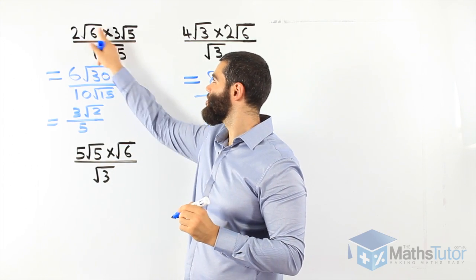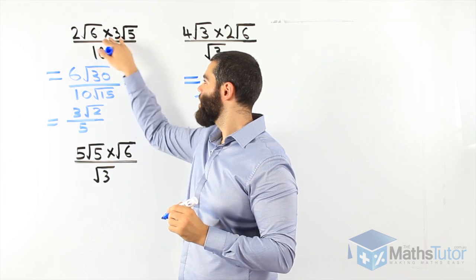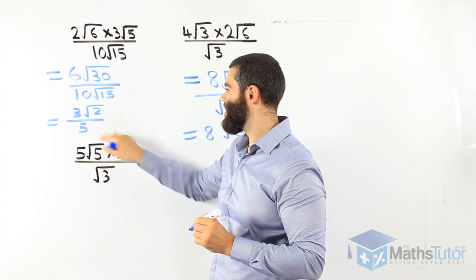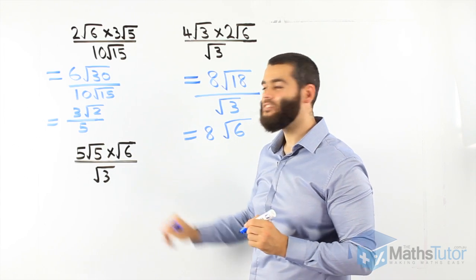So we multiply the surds on top. We multiply the numbers on top. And we simplify and we get our final answer here. Last one.